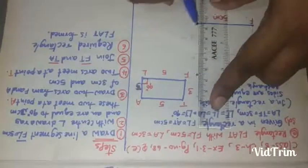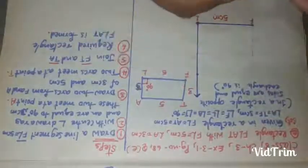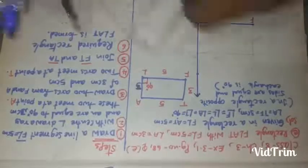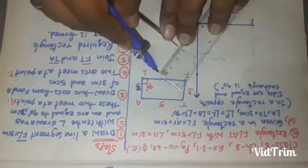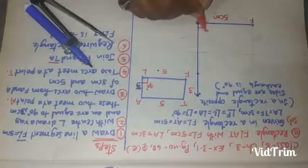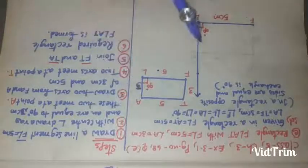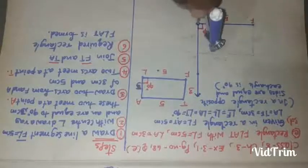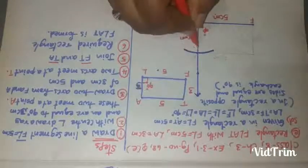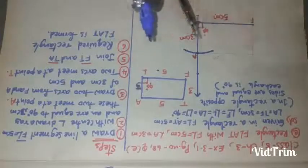Now we should draw a ray — there is no measurement for a ray, it has just one endpoint. This ray is at 90 degrees. Now with the compass, we take 3 centimeters. From L to get point A, we draw an arc of 3 centimeters. Where the ray and arc meet, that gives us point A.